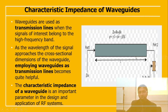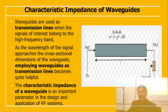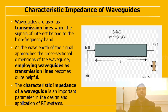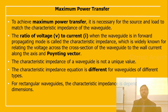Looking at the input impedance: port one and port two, with the load given by R_L plus jX_L (load resistance plus load reactance). The output is R_0 plus jX_0, and phi can be given as gamma·L, which is (alpha + j·beta) multiplied by L. The characteristic impedance of the waveguide is a very important parameter in the design and application of RF-based systems. To achieve maximum power transfer, it is necessary for the source and load to match the characteristic impedance of the waveguide.